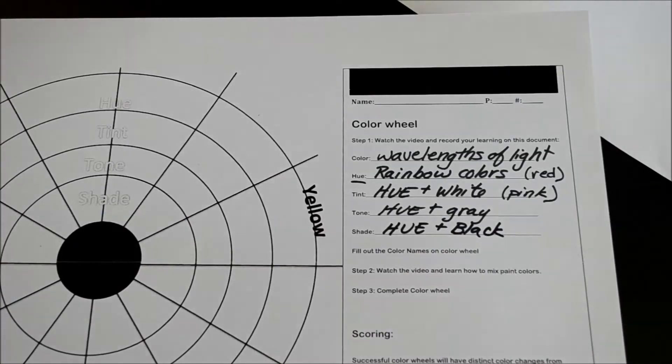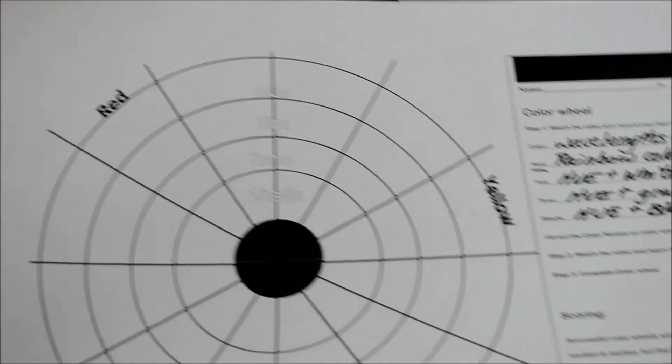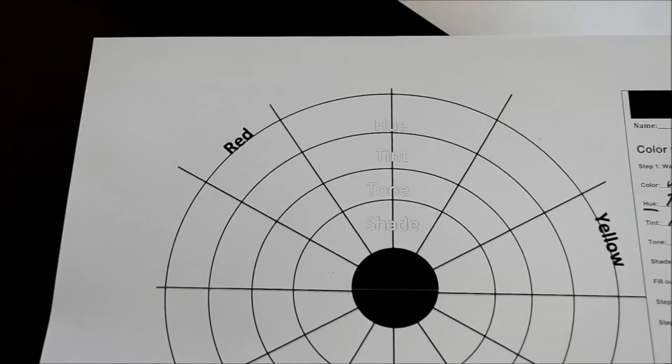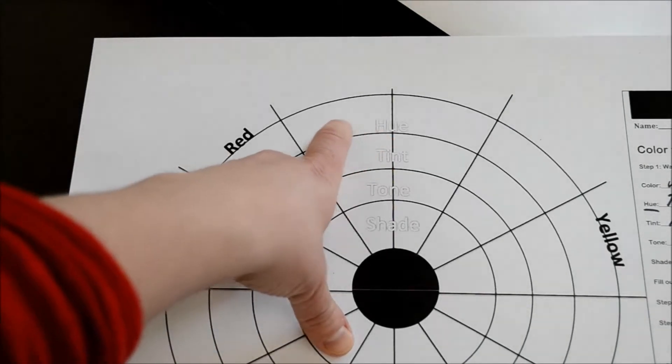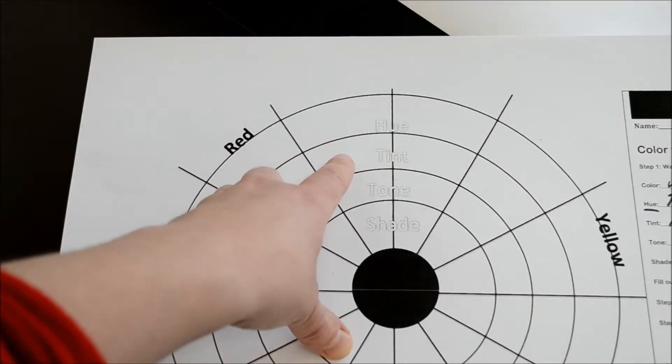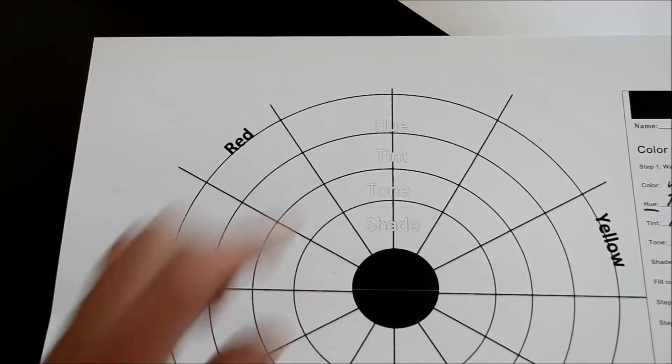The next thing we're going to do is fill in all the colors that go around our wheel. You'll notice that your wheel tells you this is the hue circle. This is the tint, the tone, and the shade.